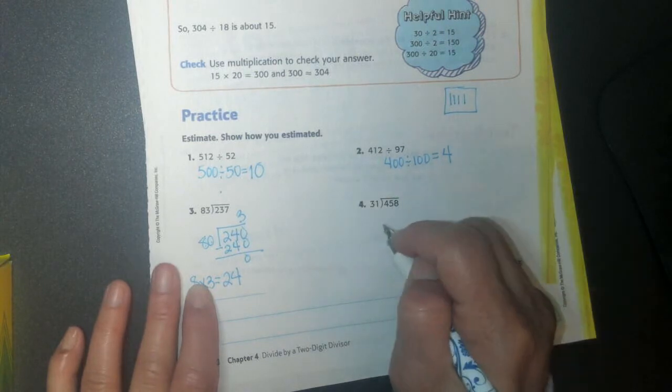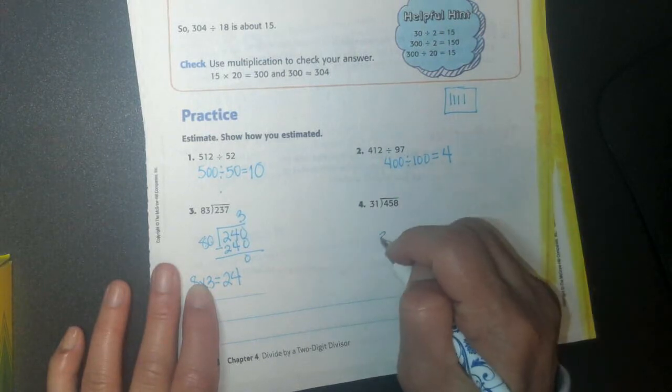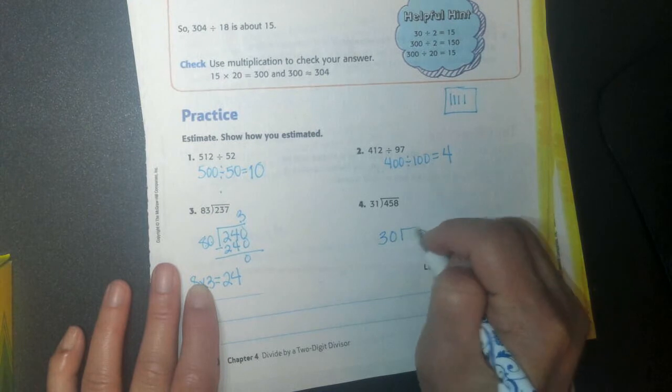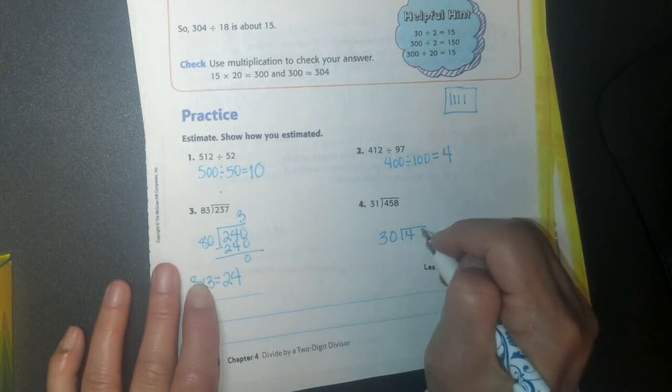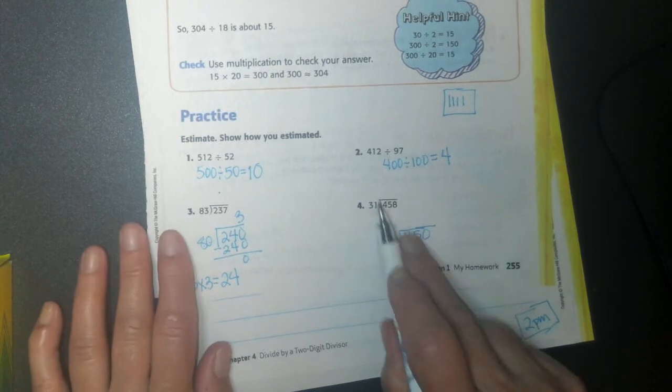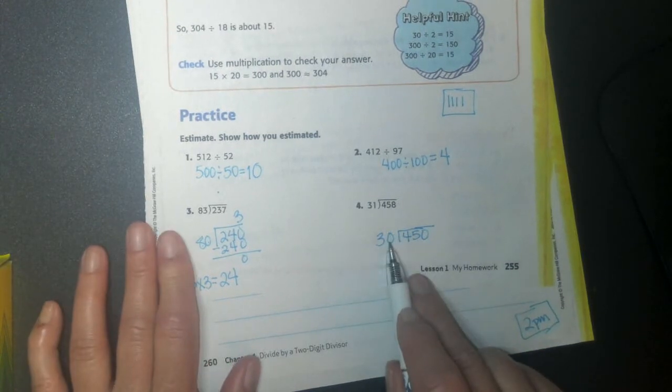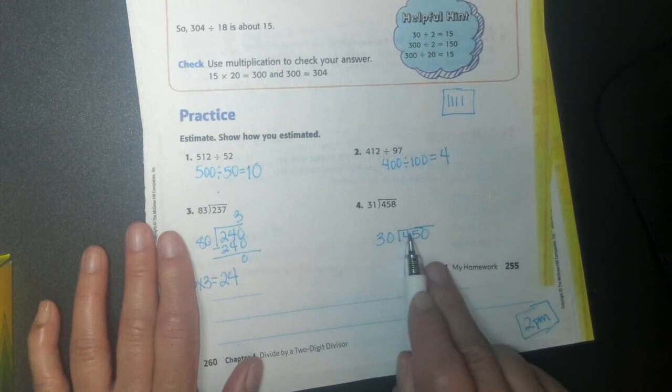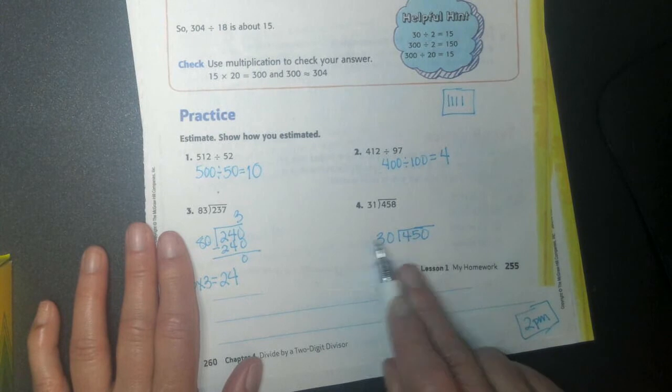So I'm going to try and do this problem instead. I'm going to say 30 into 450. So I know, it's a little close, it's not super close, but I know 30 is 15 plus 15. And I know 450, I know 45 is 15 plus 15 plus 15. So I see a little math fact there.